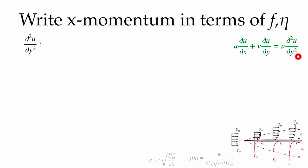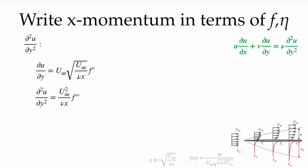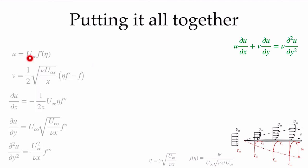Finally, we need the second derivative of u with respect to y, appearing in the viscous force term. Taking the derivative twice with respect to y: the first derivative gives an f-double-prime factor, and the second derivative introduces a third derivative of the non-dimensional stream function f-triple-prime. Now we have all the terms — u, v, du/dx, du/dy, and d²u/dy² — ready to substitute into the x-momentum equation. Working through the algebra of substituting and simplifying gives the resulting ordinary differential equation.